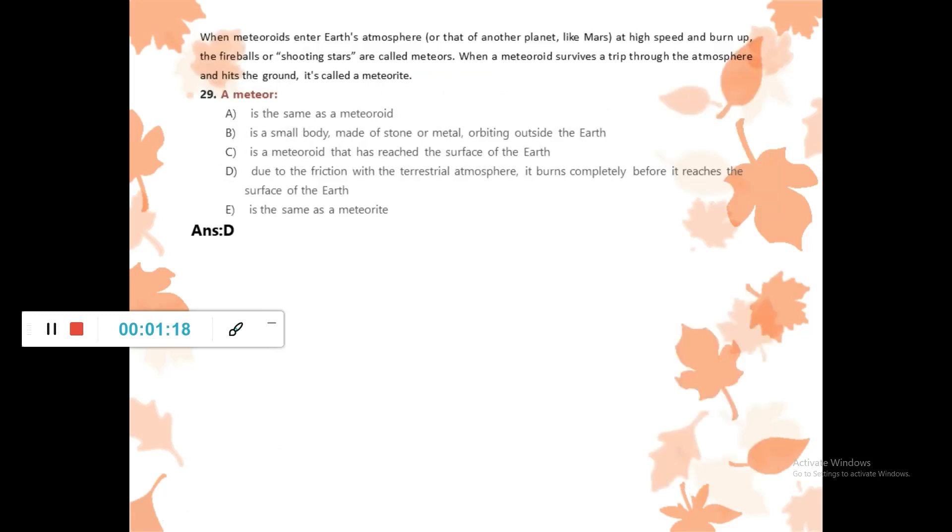Question 29: A meteor is a small body made of stone or metal. When meteorites enter the Earth's atmosphere at high speed and burn up, the fireballs or shooting stars are called meteors. When a meteorite survives a trip through the atmosphere and hits the ground, it is called a meteorite. It burns completely before it reaches the surface of the Earth due to friction with the atmosphere. D is correct.